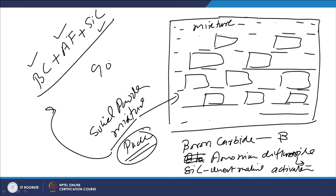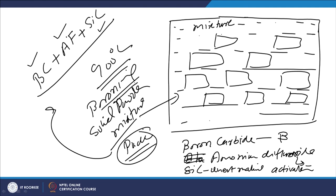A temperature of 900 degrees centigrade is used for boronizing. The mixture provides boron to be introduced at the surface of the component. There is a particular ratio of this mixture: boron carbide is 5 percent, the activator ammonium difluoride is 2 percent, and the balance — 93 percent — is silicon carbide as the inert material.